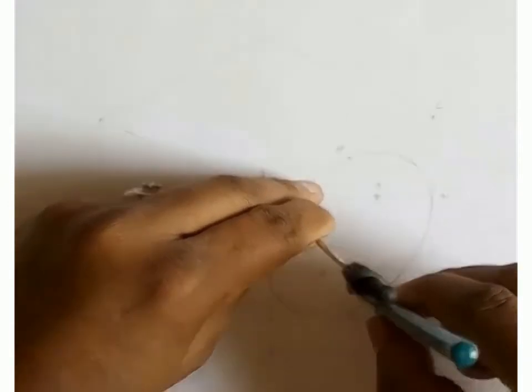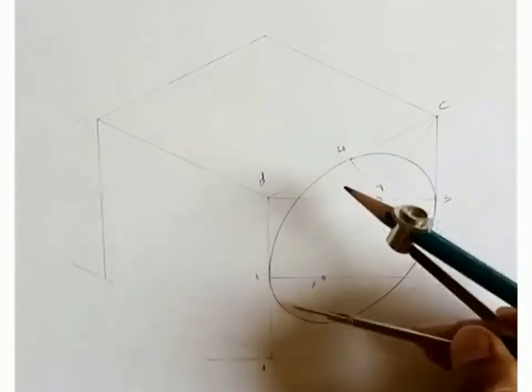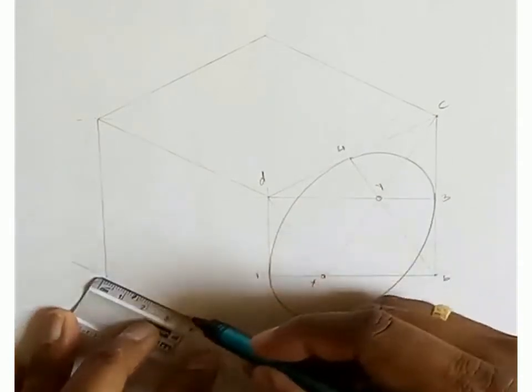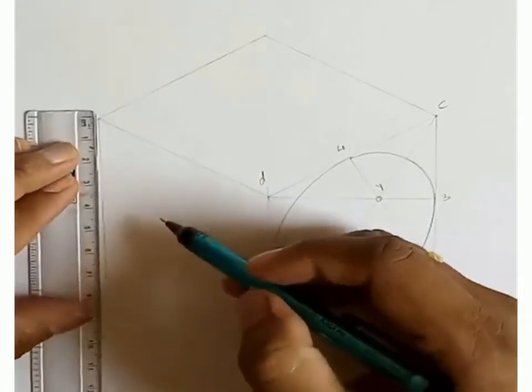This is the complete view of isometric circle on right vertical surface. Now we will draw it on left vertical surface. First mark midpoints of each side.